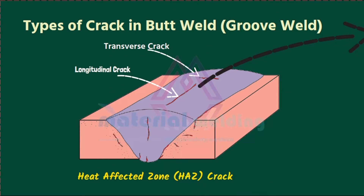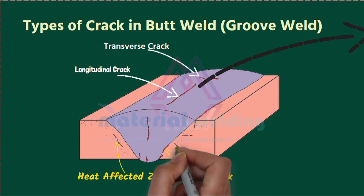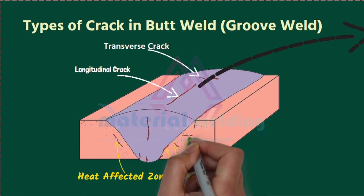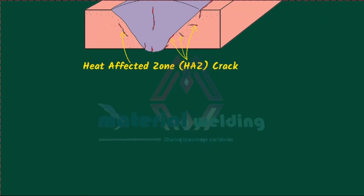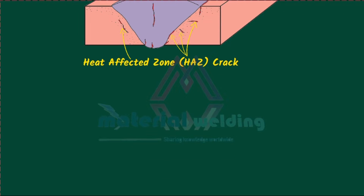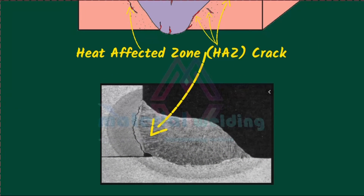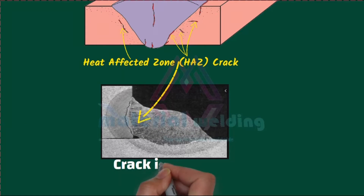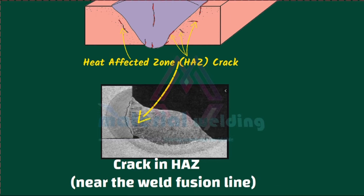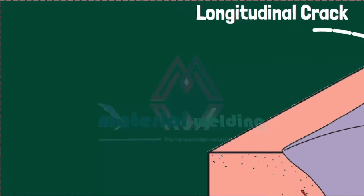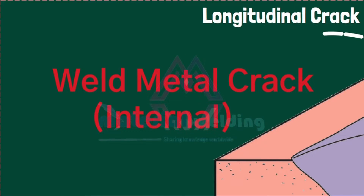Heat affected zone cracks, or HAZ cracks, are found in the HAZ area of the weld. Weld metal cracks occur within the weld metal itself.